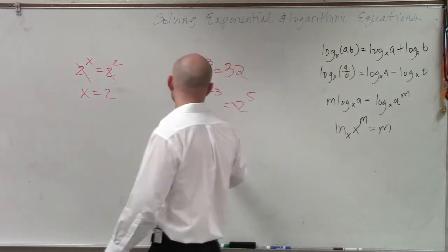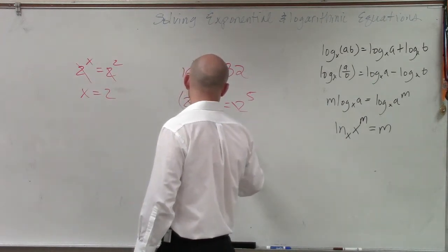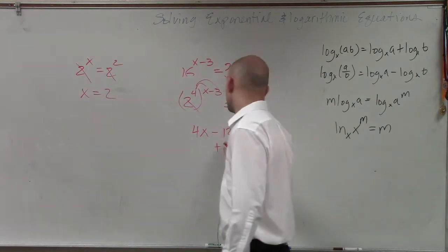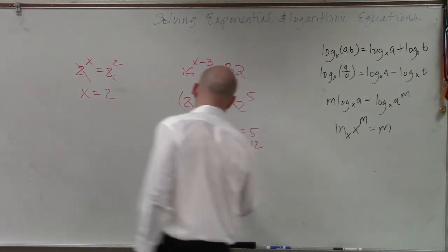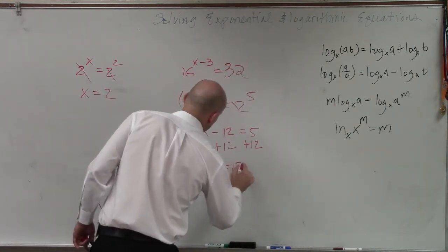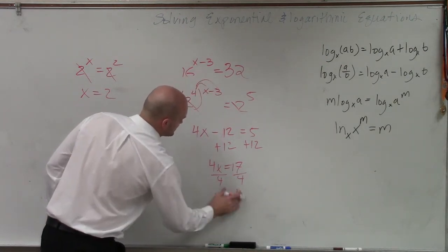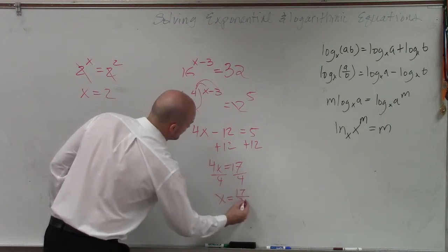The base is eliminated. So you're left with 4x minus 12 equals 5. Add 12, add 12. 4x equals 17. Divide by 4, divide by 4. x equals 17 over 4.